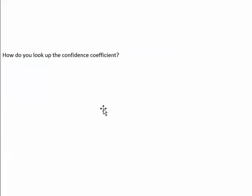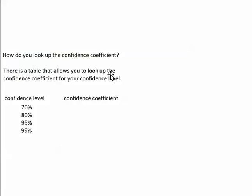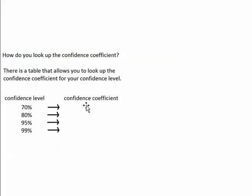Now let's talk about how you actually look up the confidence coefficient in the table. There is a table that allows you to look up the confidence coefficient for your selected confidence level. The table has several rows, and each row is a different confidence level. When you go to the table, you go to the row for your confidence level and get your confidence coefficient. For example, to calculate the 70% margin of error, get the confidence coefficient from that row; for the 80% margin of error, use the corresponding row.